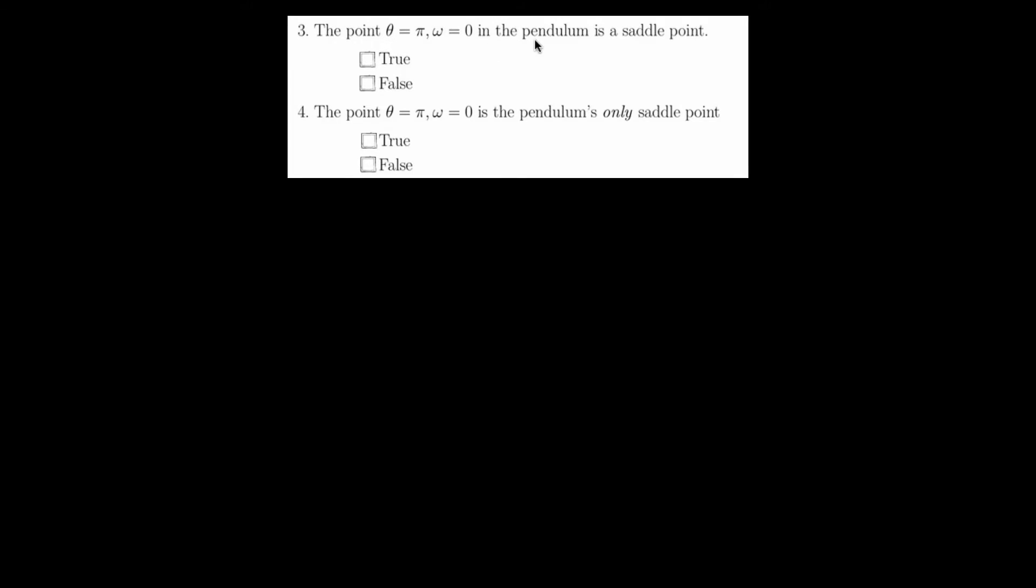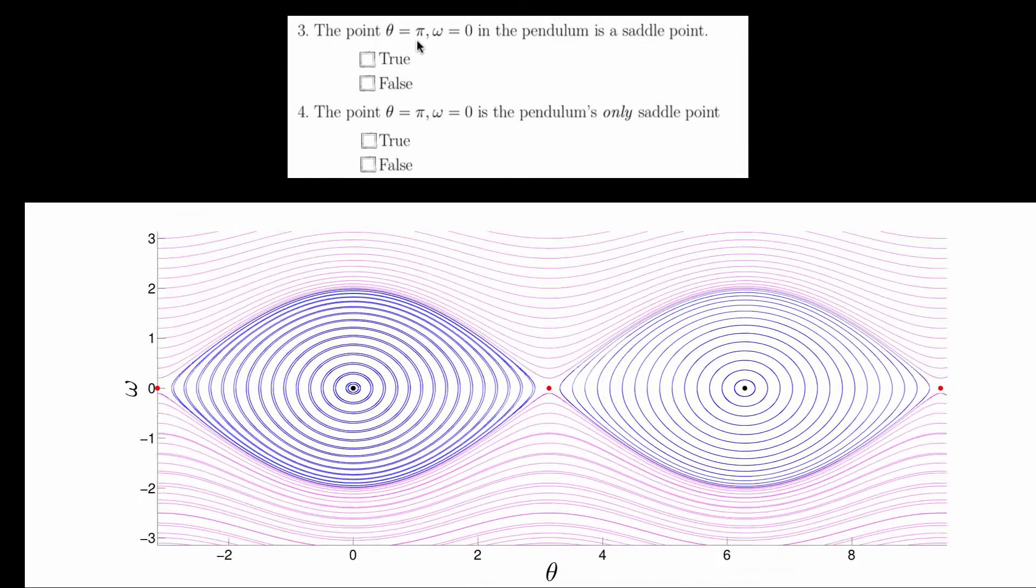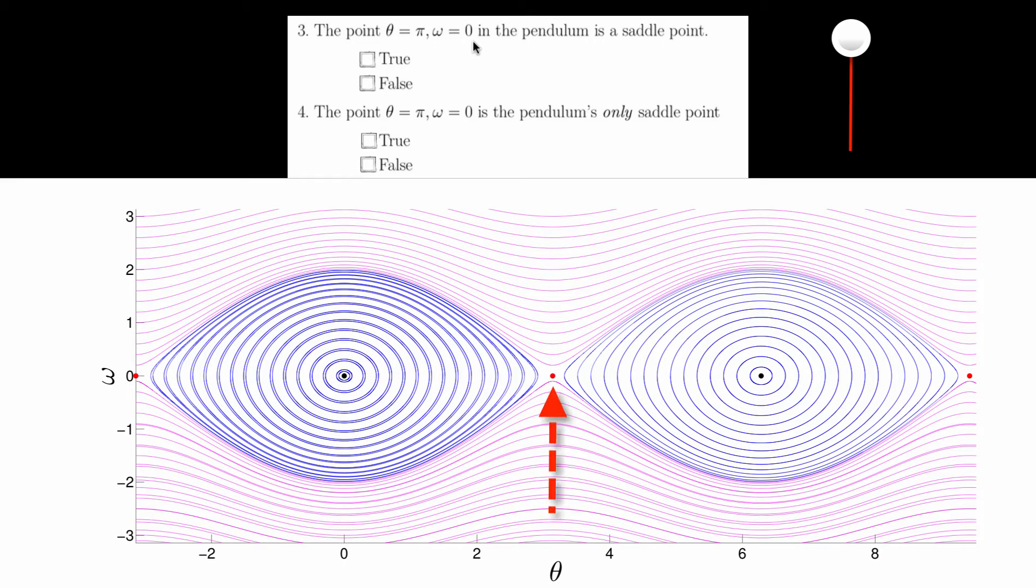The next two questions involve the pendulum at theta equals pi, so this inverted position, and no angular velocity. The first question asks if this is a saddle point. Remember that in quiz solution 4.2, we showed in depth that this point, and actually any odd multiple of pi, is a saddle point of this dynamical system.